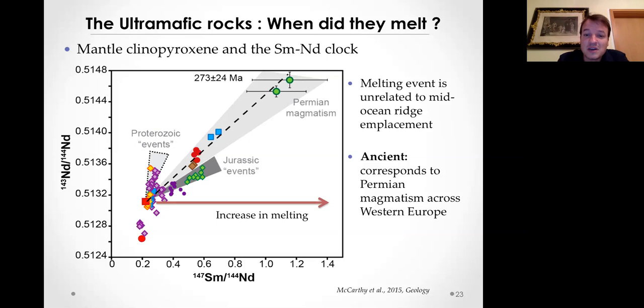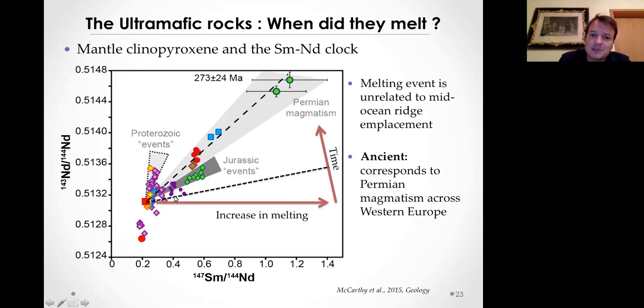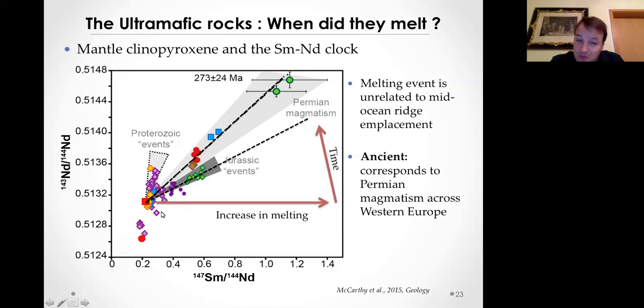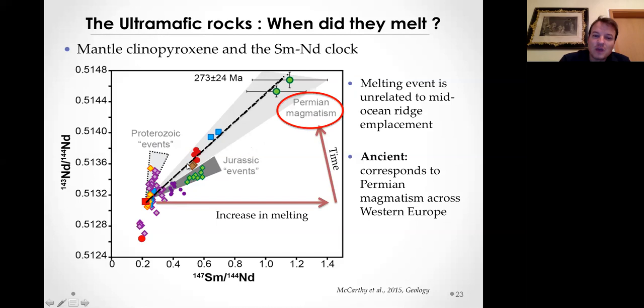If you're melting your mantle during mid-ocean ridge spreading, you get an array of pyroxenes with compositions along a melt-depletion line. With time, once the system cools down, you have radiogenic in-growth as samarium transforms to neodymium, and the 143Nd/144Nd ratio increases. If you have depleted peridotites that have only been affected by partial melting and plot along a specific isochron line, you can calculate an age. This assumes an initially homogenous mantle source before melting. What's particularly interesting is the result throughout the Alpine ophiolites.